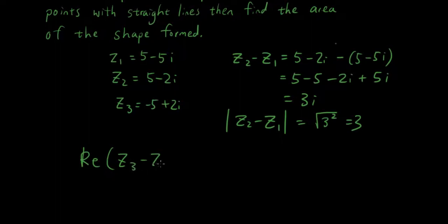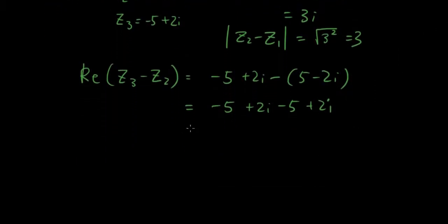Okay, so let's put in -5+2i, minus 5-2i, so that's -5+2i minus 5+2i. So that is -10+4i.